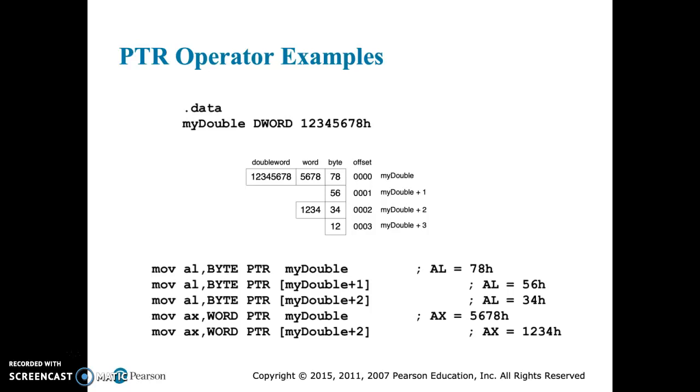If we use an offset of plus one, we're going to go two over and use 56h. If we use an offset of two, we're going to go over and use 34h.